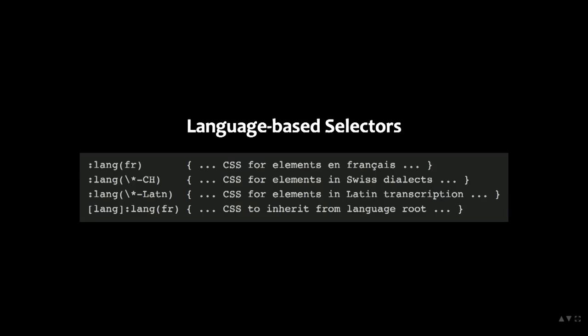Sometimes you want something that's not automatically done, and for that we have language-based selectors, which let you check on the language. Now, the lang attribute — you can use an attribute selector to check that, but it will not work on a child of the element on which you have set the lang attribute. The :lang selector will, because it checks the inherited value. Also, the :lang selector can do certain kinds of wildcard matching and is a little bit more powerful in how it matches the language.